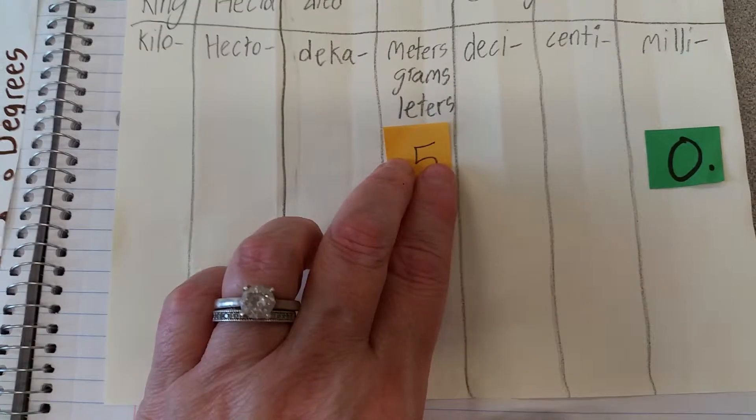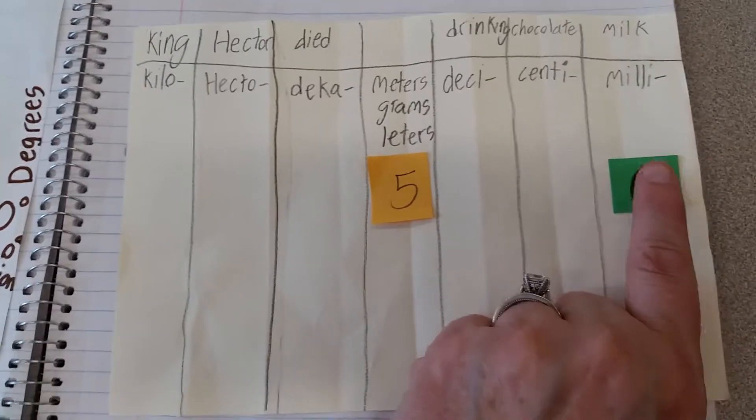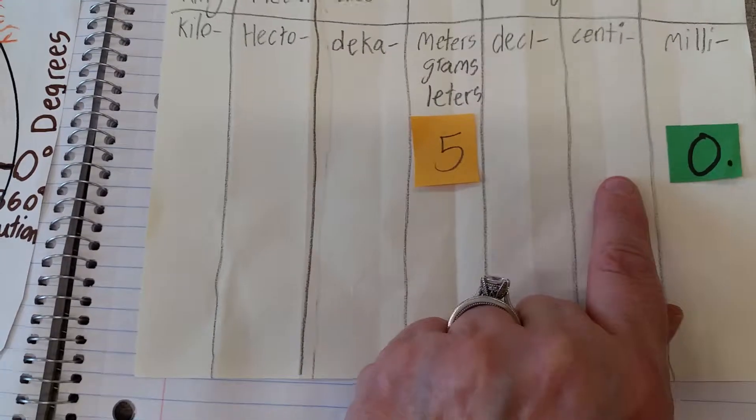This is a lot easier when you have two hands of course. And so I'm just going to move my froggy over here. Hop, hop, hop. And I'm going to fill in the middle with zeros. So how many millimeters are in a meter? Five thousand. Five zero zero zero.